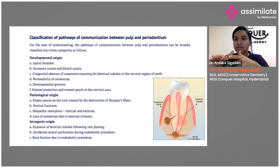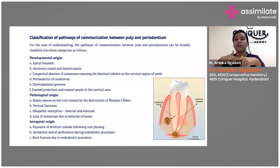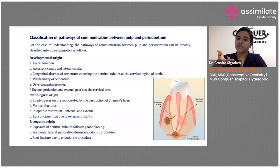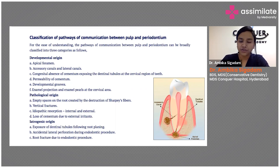Vertical fractures are also a pathological condition. Idiopathic resorption — whether internal or external — can be a pathological condition. Loss of cementum due to irritants is another pathological condition. These all create a pathway between your pulp and the periodontium. Iatrogenic origins — due to our own negligence — could be the exposure of dentinal tubules during root planing or curettage.